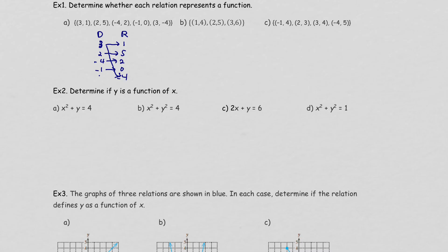This shows that 2, 4, and -1 each have only one y value, but x = 3 has two y values: 1 and -4. By definition, if one x has more than one range value, that is not a function. So this one we say is not a function.